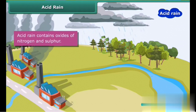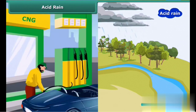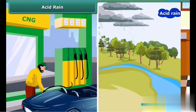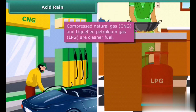How can we reduce acid rain? Use of cleaner fuels like compressed natural gas (CNG) and liquefied petroleum gas (LPG) can reduce acid rain.